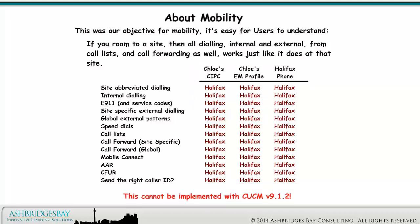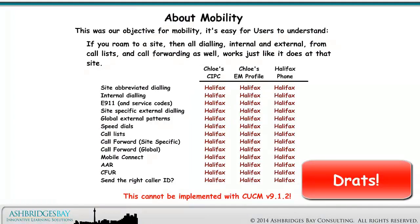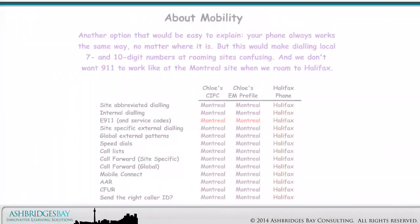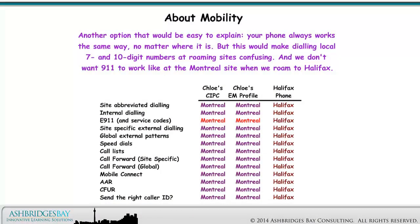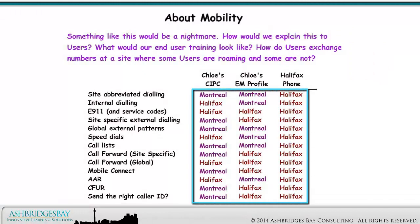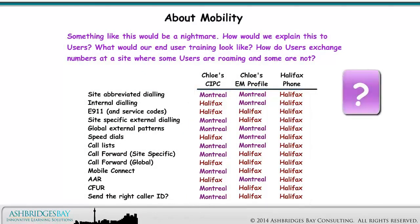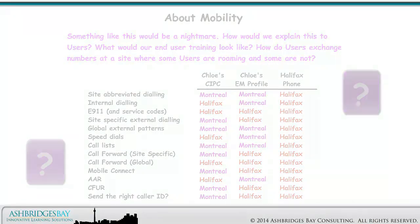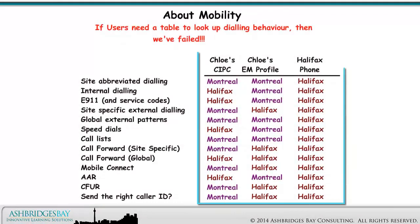It turns out that this cannot be implemented with CUCM version 9.1.2. Another option that would be easy to explain: your phone always works the same way, no matter where it is. But this would make dialing local 7 and 10-digit numbers at roaming sites confusing, and we don't want 9-1-1 to work like at the Montreal site when we roam to Halifax. Something like this would be a nightmare. How would we explain this to users? If users need a table to look up dialing behavior, then we have failed — epically failed.